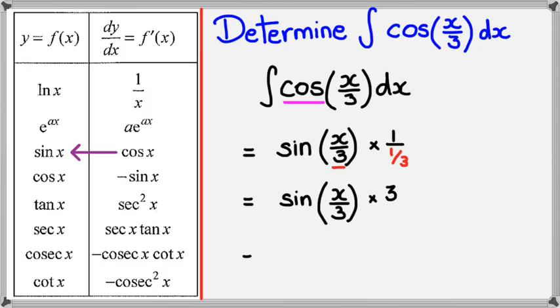And of course, simplifying this further, I will get 3 sine x over 3. And of course, don't forget your arbitrary constant, which is c.